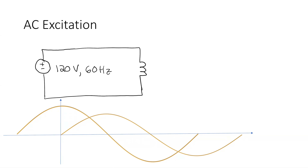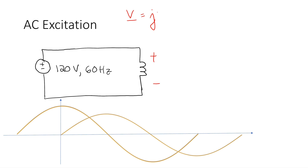So if I connect 120 volts, 60 Hz to an inductor and I want to figure out the current, I'd use phasors. The voltage is 120 volts RMS. To find the current, V equals jωL times I — divide by the impedance. We also know V of t equals L di/dt. And we've made this definition that lambda — flux linkage — equals L times I.